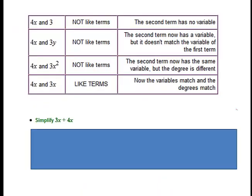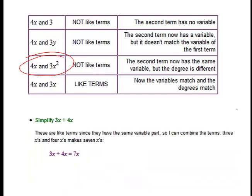4X and 3 are not like terms. 4X and 3Y are not like terms either — think bananas and apples. 4X and X squared are not like terms because X squared and X are not the same thing. But 4X and 3X are like terms because they both have X. So simplify 3X plus 4X: it equals 7X. Like adding three bananas plus four bananas — you get seven bananas.